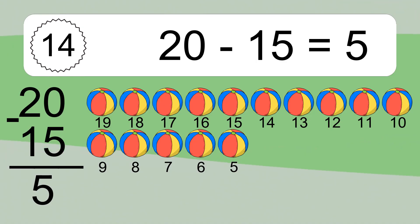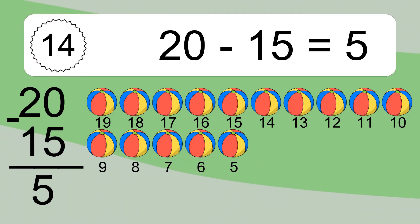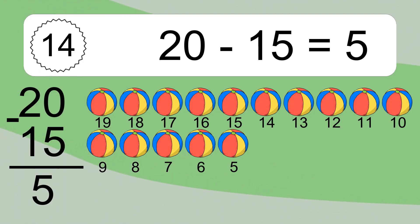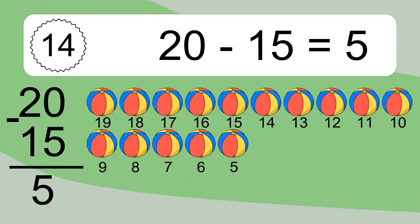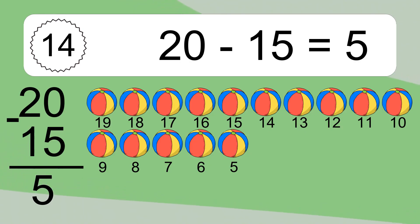20 minus 15 equals 5. Let's count it: 19, 18, 17, 16, 15, 14, 13, 12, 11, 10, 9, 8, 7, 6, 5. 14 minus 11 equals what?